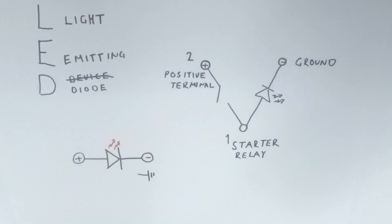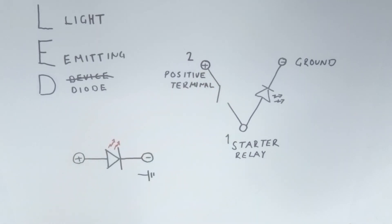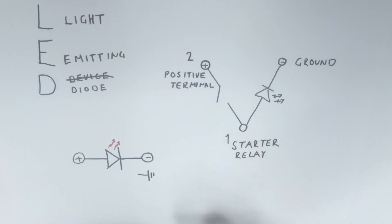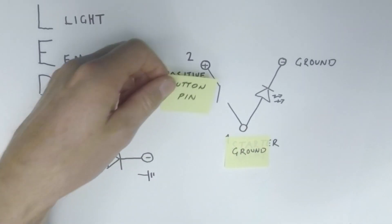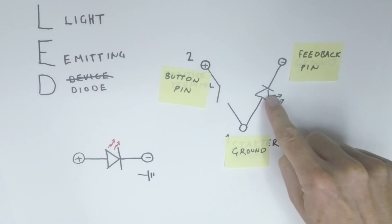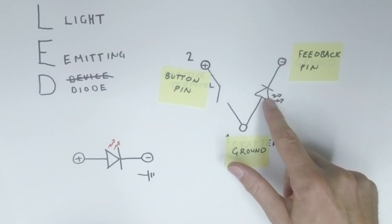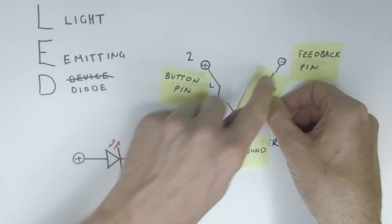And since we can't change the mechanical parts without a lot of work, we're going to work with what we have. This button is hard to change. So it's going to stay between one and two. And the LED needs to stay between one and three. And that means we need to connect them to a common ground. And the only common place is number one. Number two we need to connect to a button pin. And number three we need to connect to a feedback pin. However, since electricity can't move from ground to positive, which is in the feedback pin, the LED is in the wrong direction. And we need to take it out and move it around.